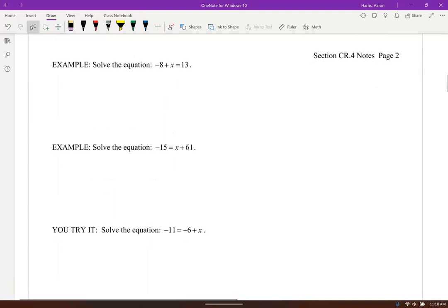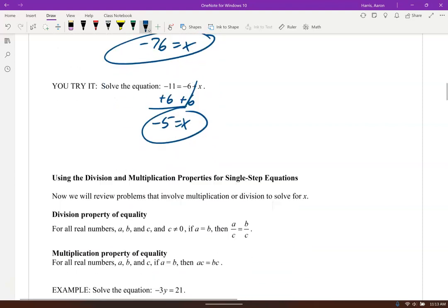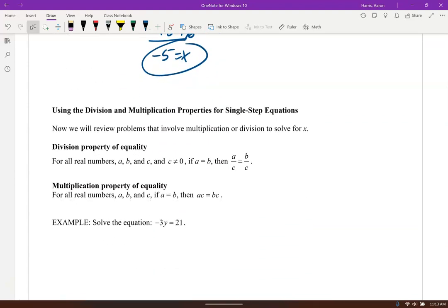Let me pause it right here. Good work. Go ahead, check yourself here. I would actually subtract 61 here, and then I only have one step on that. And then finally, awesome. Now let's use some multiplication and division here for single step equations.